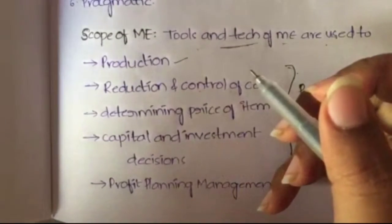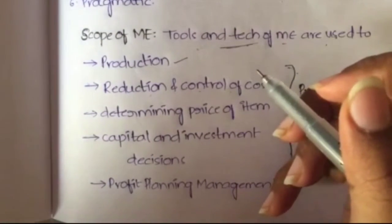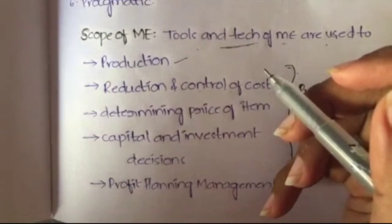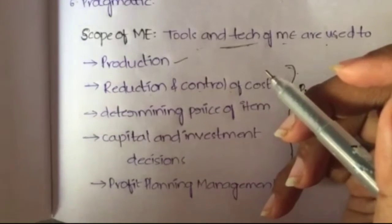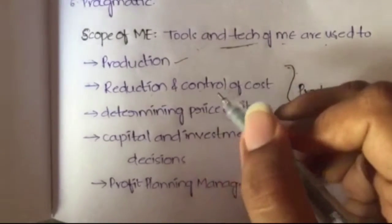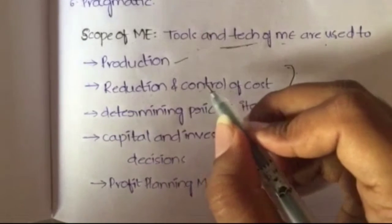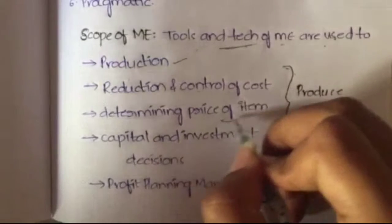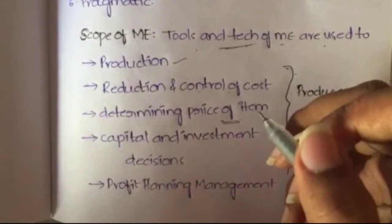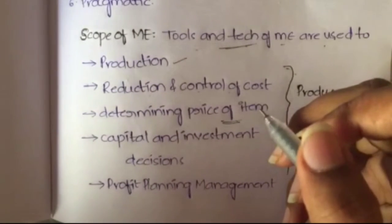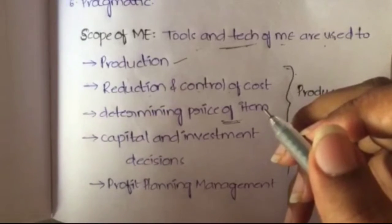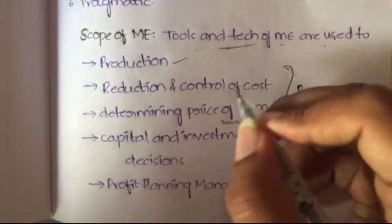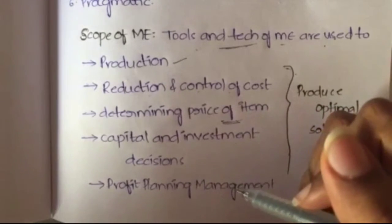The next area of scope is reduction and control of cost. You need to reduce the maximum amount of production cost to make profits. Managerial economics also helps in determining the price of an item — you calculate the cost of production, labor, and how much profit you want to make.